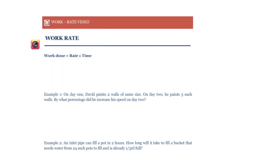We'll start with the basic formula: work done is equal to rate times time. This is the same as distance equals speed times time. In fact, distance equals speed times time is a special case of this formula — when work done is in terms of distance traveled, the rate is in terms of speed.